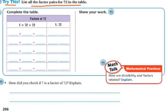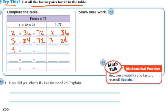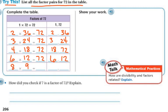Let's list all the factors for 72. 1 times 72 equals 72. 2 times 36 equals 72, so 2 and 36 are factors. 3 times 24 is 72, so 3 and 24 are factors. 4 times 18 is 72, so 4 and 18 are factors. 5 does not go into 72 because it doesn't end in a 0 or a 5. 6 times 12 is 72, so 6 and 12 are factors. 7 does not go into 72. But 8 does — 8 times 9 is 72, so 8 and 9 are also factors.